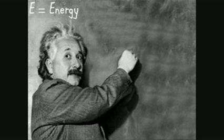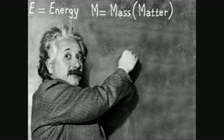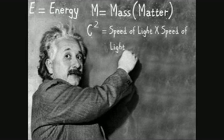Now, E represents energy, m represents mass or matter, and c squared represents the speed of light times itself. Although this equation deals with some very complex scientific principles and concepts, because of the equal sign, there is a very simple way of understanding its underlying concept.